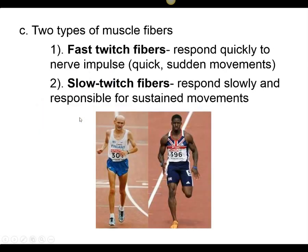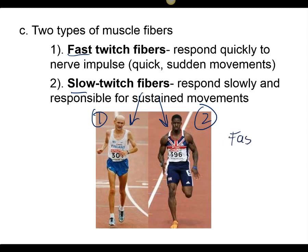We have two types of muscle fibers in our muscles: fast twitch, which responds to really quick, jerky movements, and slow twitch, which can have slow, sustained contractions. A marathon runner relies on slow twitch fibers, while a sprinter relies on fast twitch fibers. It has to do with the ability of those muscle fibers to contract either quickly or slowly.